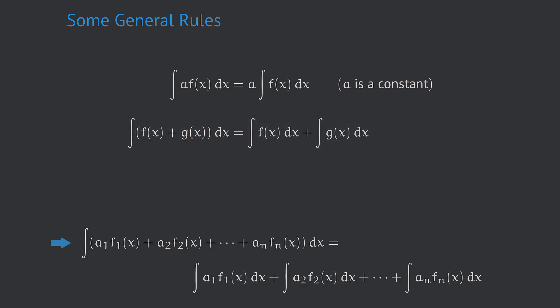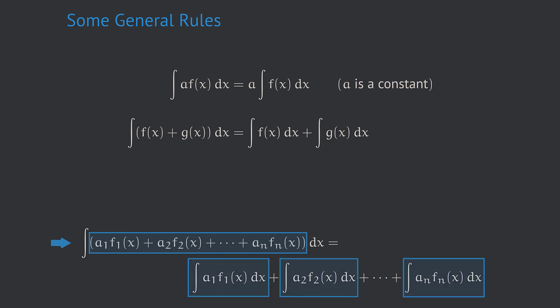The combination of these two rules gives us a very important rule for dealing with linear combinations of functions. A linear combination of functions f1 to fn is generally given by a sum with coefficients. If we have to integrate such an expression, we can split it up and pull the respective constant in front of each integral symbol. All that remains is to integrate the individual functions f1, f2, f3, up to fn.